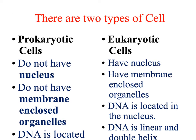If we divide cells into two types, there are prokaryotic cells and eukaryotic cells. The most important difference: prokaryotic cells do not have a nucleus or nuclear envelope — no nuclear membrane. But eukaryotic cells do have a nucleus.